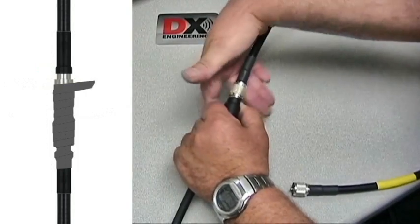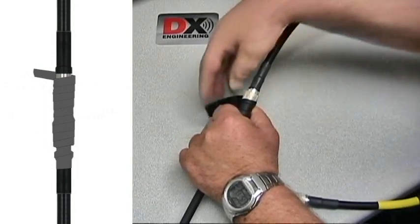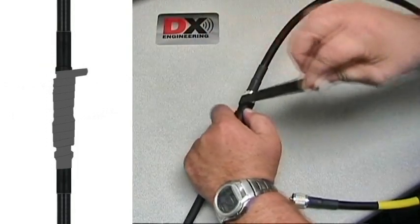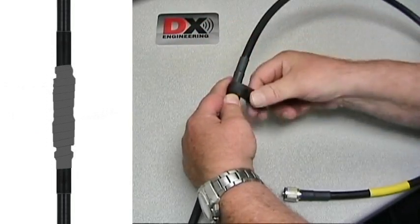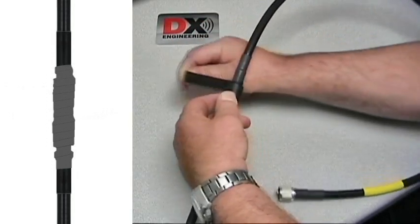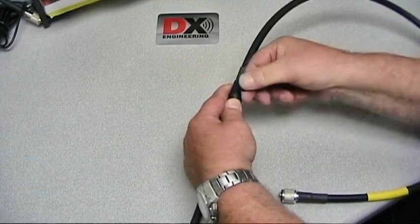If you cut the Temflex too short, no problem. Just get another piece and start wrapping over the end of what you have and then keep going. It will fuse to itself making a good weatherproof covering. Keep wrapping until you have gone past the end of the second PL259. Once you reach the end, wrap it over itself and it will stick just fine.